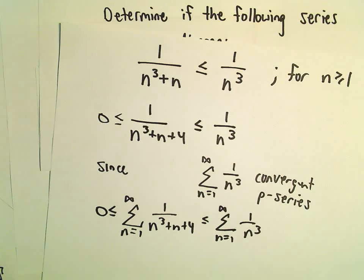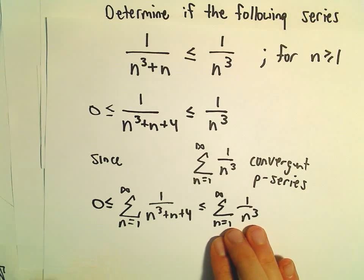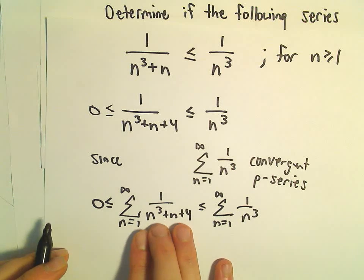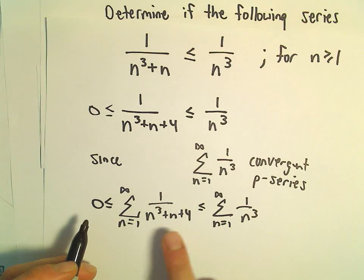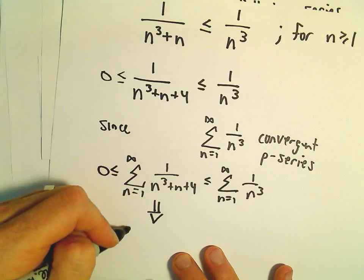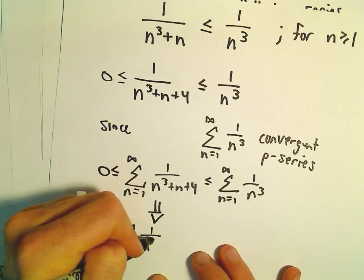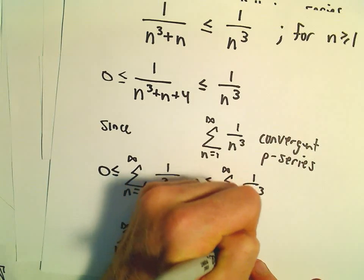and greater than or equal to 0. Since the series on the right converges, and the numerical values we get out are going to be even smaller, that would imply by the direct comparison theorem that our original series n equals 1 to infinity of 1 over n cubed plus n plus 4 also converges.